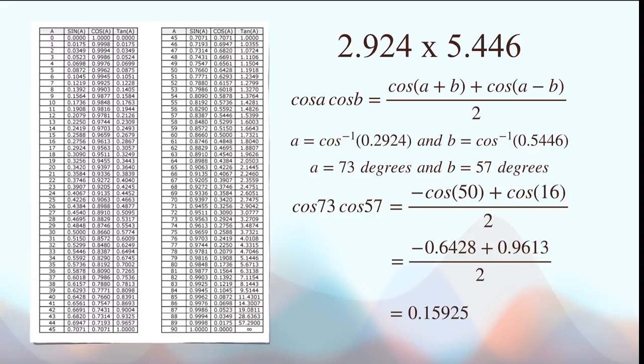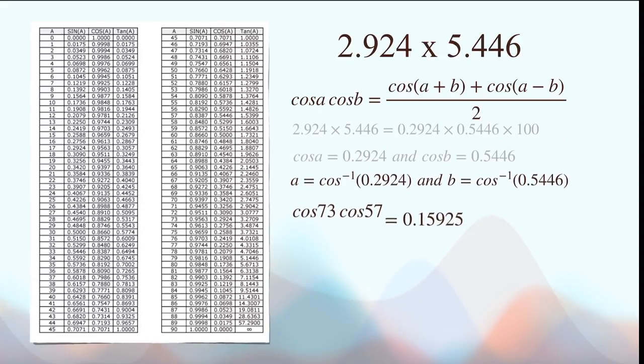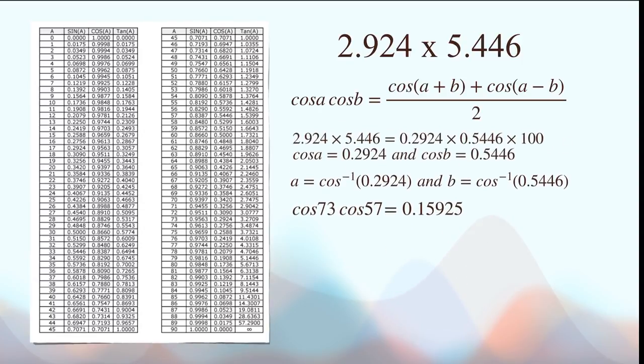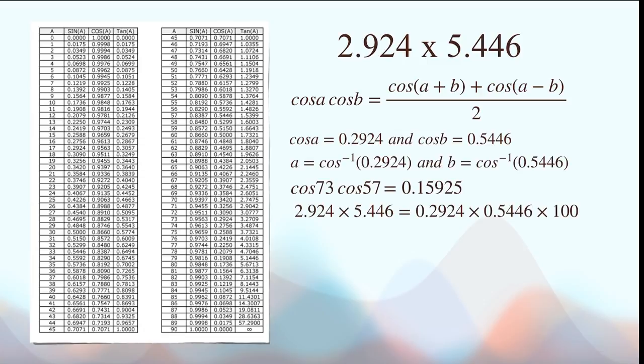And because cos 73 is equal to 0.2924 and cos B is equal to 0.5446, we have that 2.924 times 5.446 is equal to 0.15925 times 100, which is 15.925.